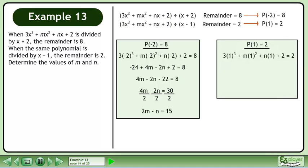Now we'll move on to p at 1 equals 2. Plug in 1 for x. Evaluate the powers and multiply. On the left side, 3 plus 2 equals 5. Subtract 5 from both sides of the equation. This gives us m plus n equals negative 3.